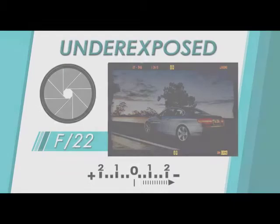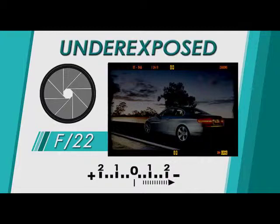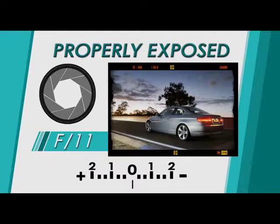An underexposed image is too dark and you'll lose detail in the shadow areas. When the little arrow on your camera's light meter is to the right of the center point, it's indicating that the image will be underexposed. To fix this, you can adjust the f-stop to a smaller number to increase the amount of light that is allowed into the camera. This will brighten up the image and allow the detail in your shadows to appear.